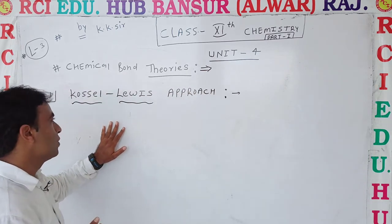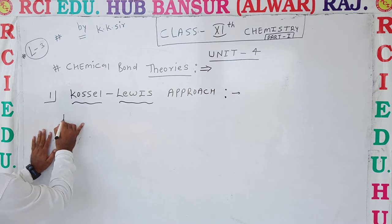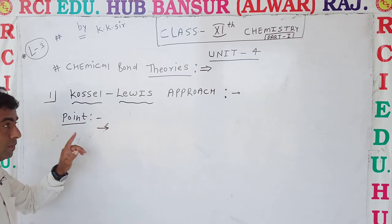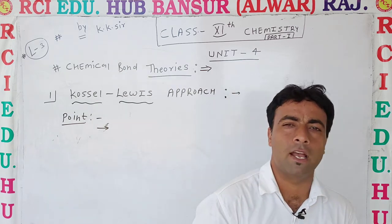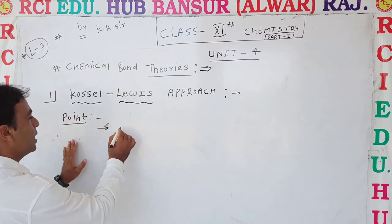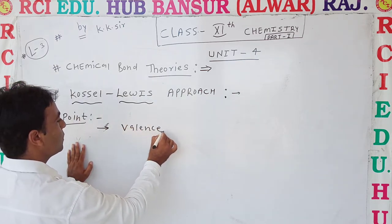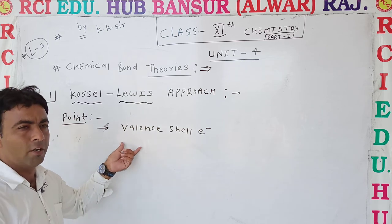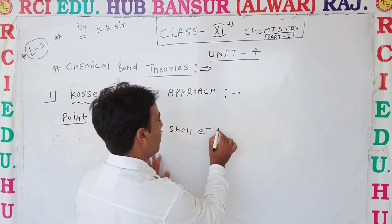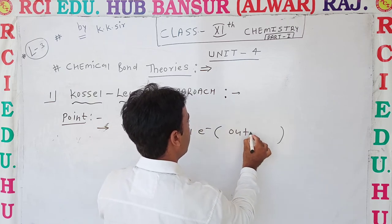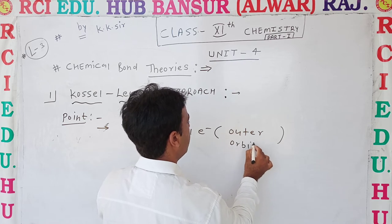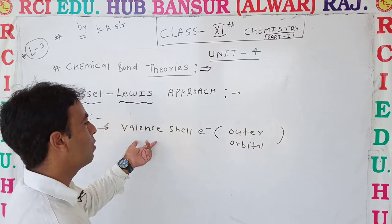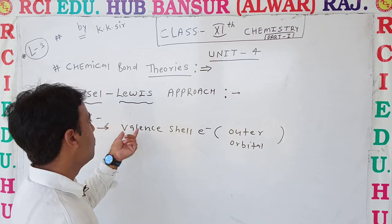According to Kossel-Lewis theory, every atom has valence shell electrons. This theory explains valence shell electrons. What are valence shell electrons? The electrons which are found in the outermost orbital — how many electrons are present in the outer orbital — those are called valence shell electrons.